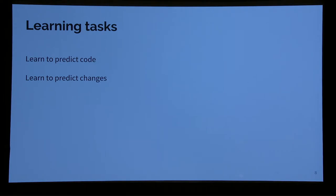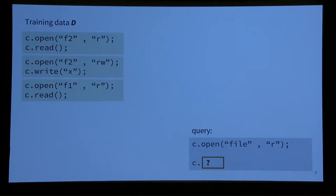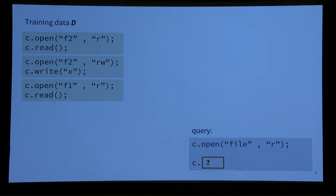I want to tell you about two main learning tasks: one is to learn to predict code, and the other is to learn to predict changes, which roughly corresponds to these two datasets. For learning to predict code, let's look at a toy API — think of it as a socket or similar: you open something, then you read and write. You have training data that says open-then-read or open-then-write. Given a query, the task is to say what should be at a given position.